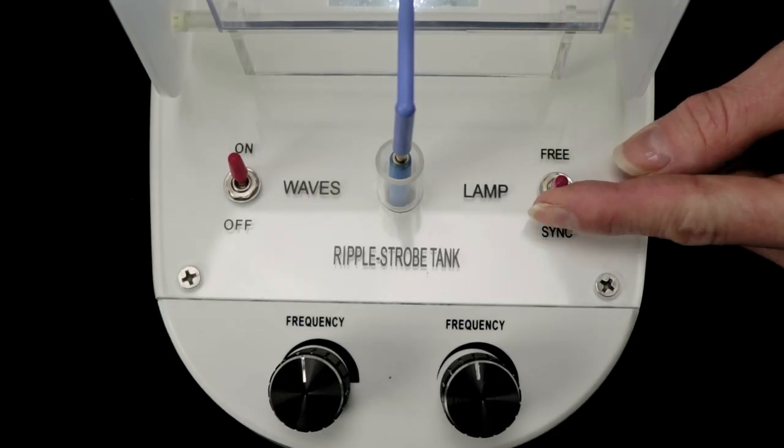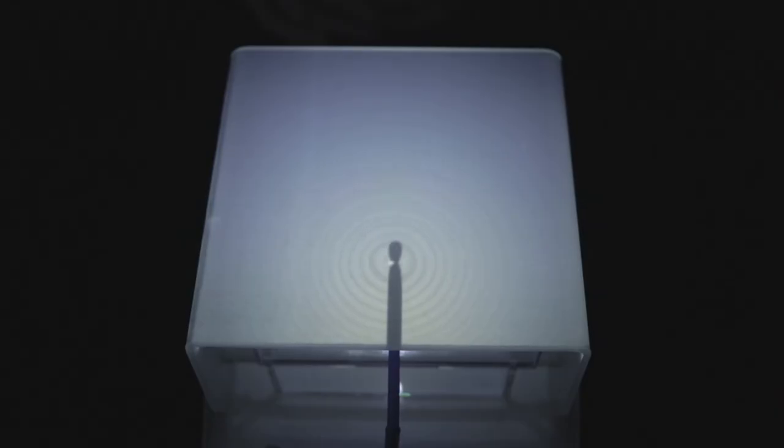To view the waves in motion, flip the illumination switch to free. This allows us to adjust the flashing frequency independently. Use the strobe control knob to adjust the flashing to a frequency close to the wave frequency in order to view the wave patterns in motion.